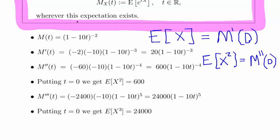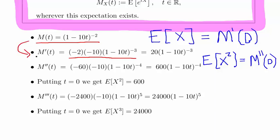This is a straightforward matter of differentiating. Our expression is (1 minus 10t) to the power of minus 2. Applying the chain rule, the first derivative becomes minus 2 times minus 10 times (1 minus 10t) to the power of minus 3, which simplifies to 20 times (1 minus 10t) to the minus 3.